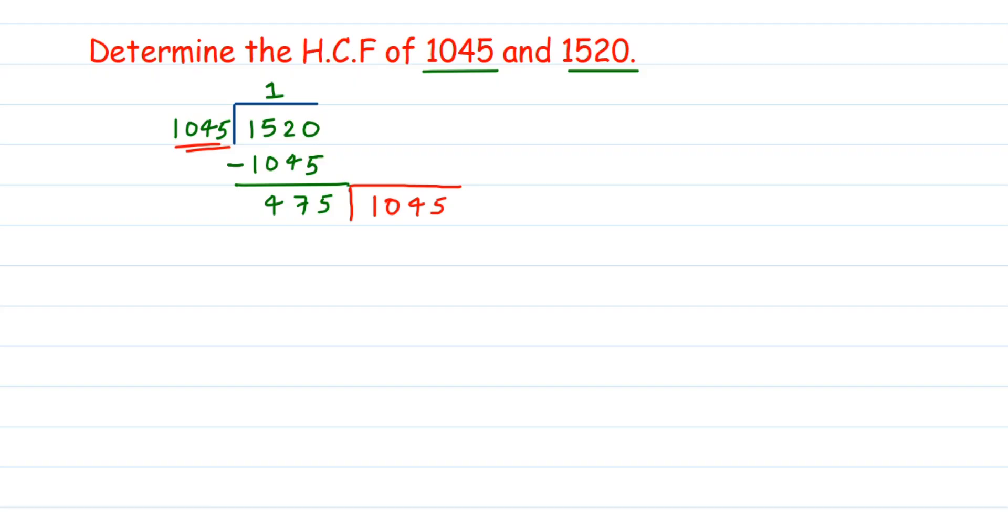First step, you will do normal division. The greater number will be dividend and the smaller one will be divisor. Divide it. Only one step. Don't divide it till you get 0. No, only one step you divide it. The remainder you got for the first division will be your divisor. And dividend, of course, it cannot be the same number. It will be the number here. In the previous step, the divisor will be your new dividend. Now, follow the same step. Again, divide these two numbers.